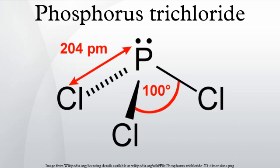Phosphorus trichloride is a chemical compound of phosphorus and chlorine, having the chemical formula PCl3. It has a trigonal pyramidal shape. It is the most important of the three phosphorus chlorides, and an important industrial chemical, being used for the manufacture of organophosphorus compounds for a wide variety of applications. It has a 31P NMR signal at around +220 ppm with reference to a phosphoric acid standard.